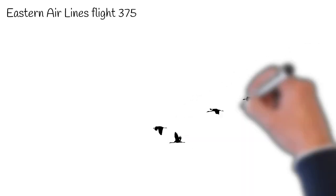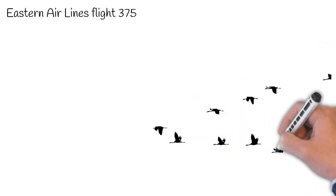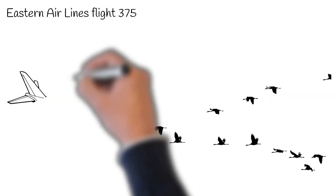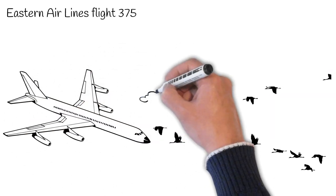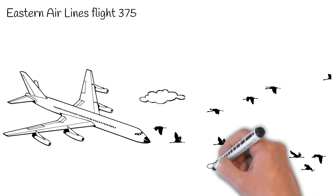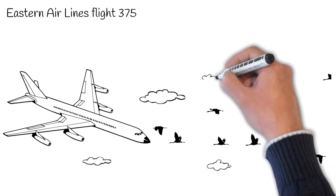The worst bird strike till today was in October 1960 on Eastern Airlines Flight 375 from Boston. The plane was flying through a flock of starlings which damaged all four engines and caused it to crash into Boston Harbor. A total of 62 people were killed on this flight.